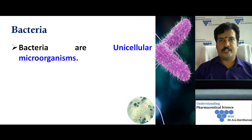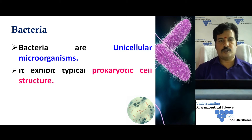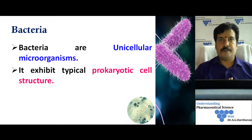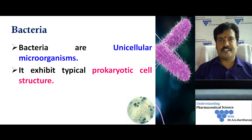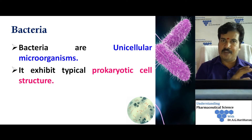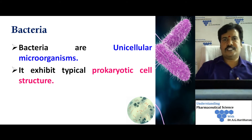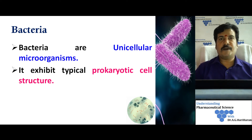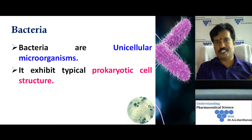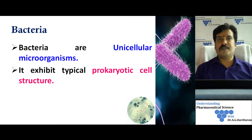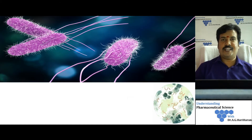Bacteria are generally unicellular microorganisms having a size range of around 0.5 to 2 micrometers, and they can be viewed only with the help of a microscope. Bacteria exhibit a typical prokaryotic cell structure — prokaryote means the bacteria does not have a well-defined membrane structure inside its cell, especially for the cytoplasmic organelles.